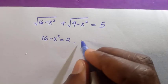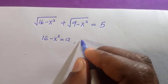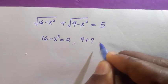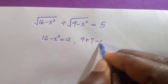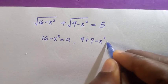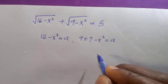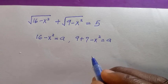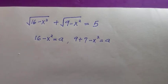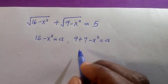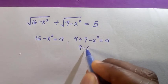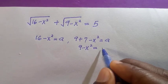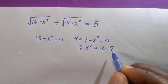From this, if I break 16 into the sum of two prime numbers — like 9 and 7 — we get 9 plus 7 minus x squared equals to a. And by transferring 7 to the other side, we have 9 minus x squared equals to a minus 7.